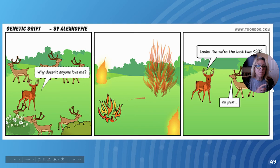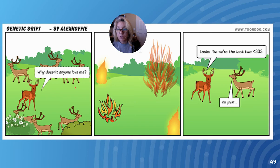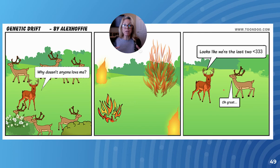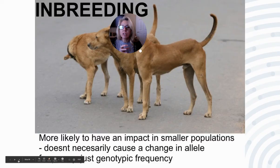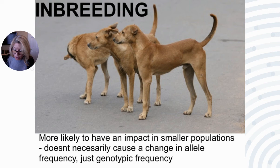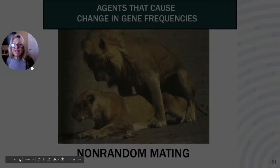Founder effect: a portion of a population starts a new population with a fraction of the total alleles, so the new population's allele frequency does not reflect the original. Here's a cartoon example of genetic drift: a reddish-colored deer is not mated with because the females don't prefer him. Then a forest fire wipes out most of the deer. All of a sudden he becomes more popular because they're the only two left. This is genetic drift — such a small population that chance events shape mating. Inbreeding doesn't necessarily change allele frequencies, but affects genotype combinations and phenotypes, which can then be selected for or against.